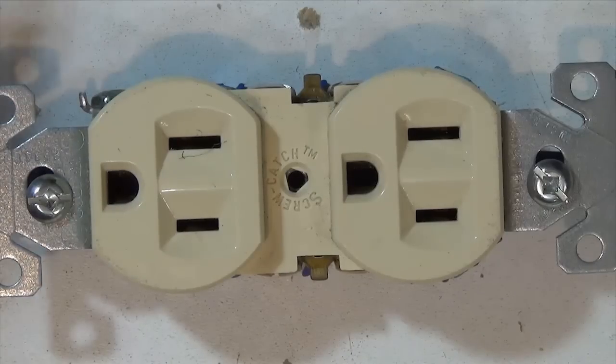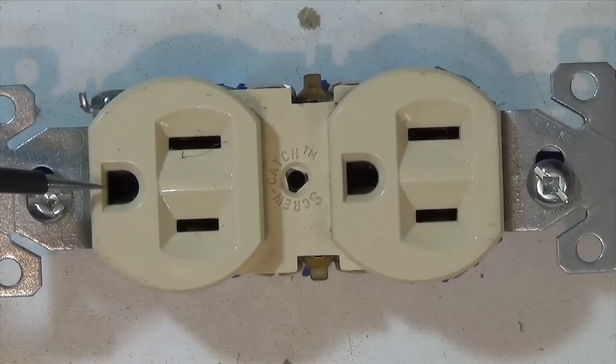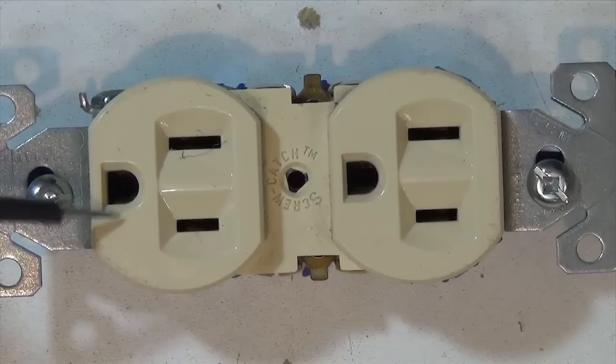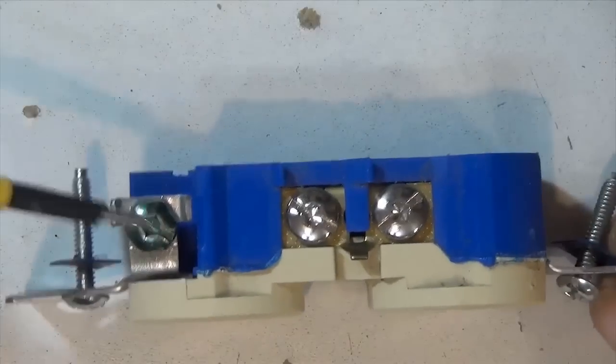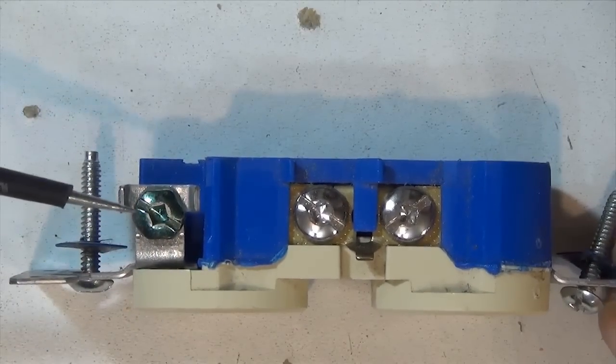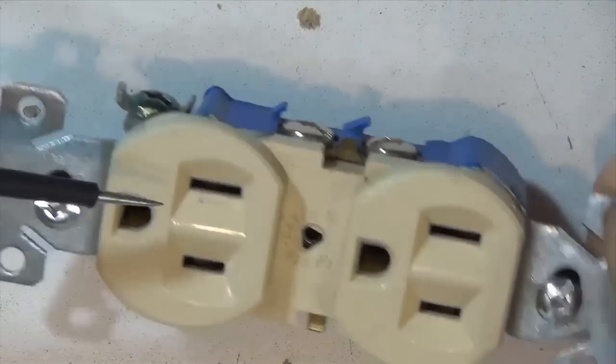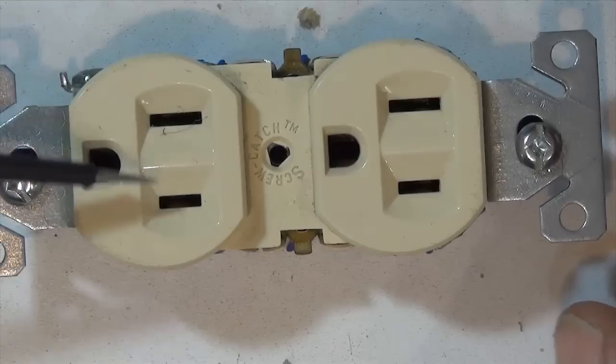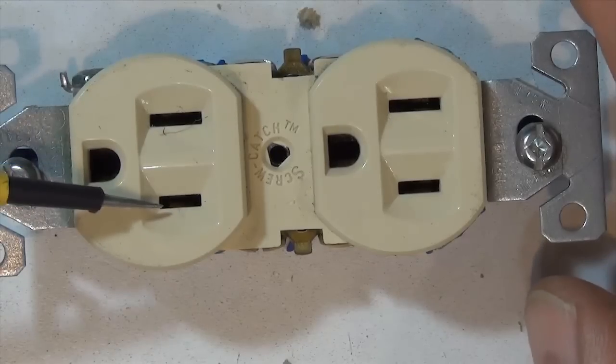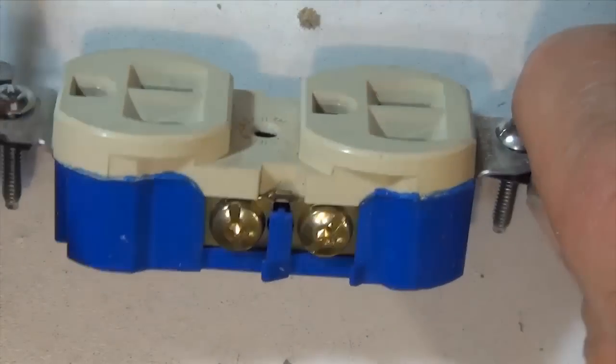For a standard 125 volt 15 amp duplex receptacle, we have three terminals. This one here is called the U-ground. That will be attached to this green screw and that would be a copper wire which actually gets connected to earth ground. Then we'll notice that we have one wider terminal outlet and one narrower terminal outlet. This narrow one is actually going to be the hot wire. That's where our voltage is.